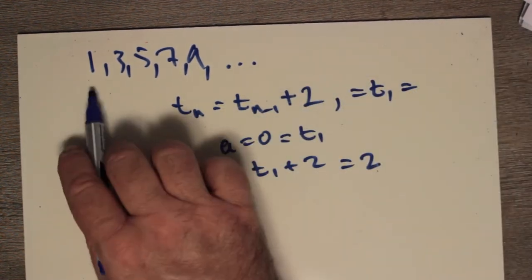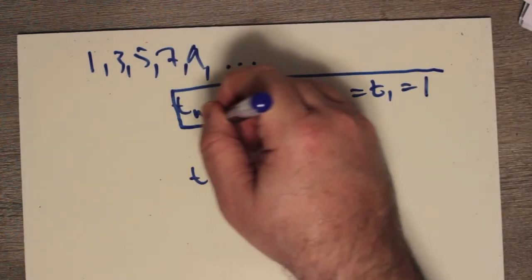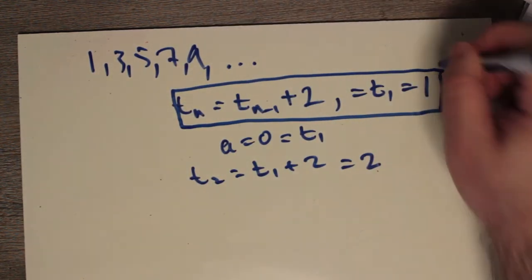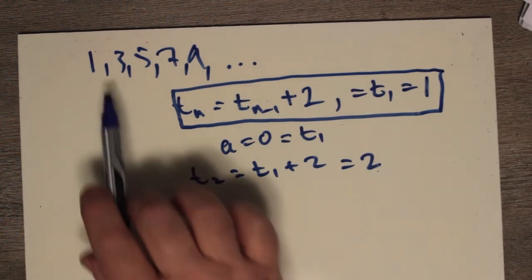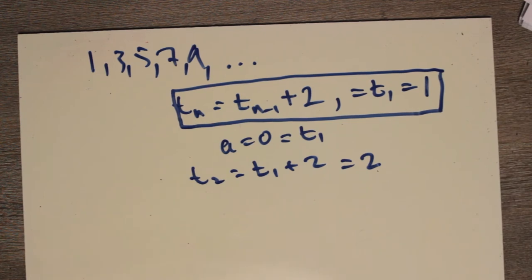So you can see that this formula does not have enough information. We need to know what t1 is. We need to know what the first term is in order to nail it to a particular arithmetic sequence. And so here, according to this, we say it's 1.